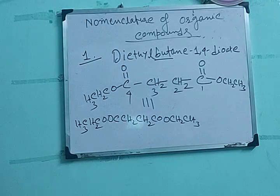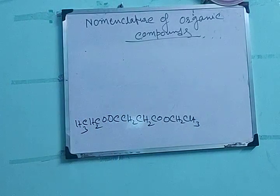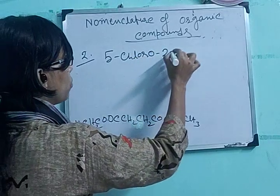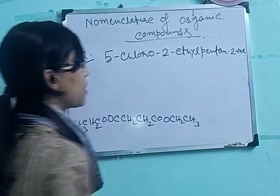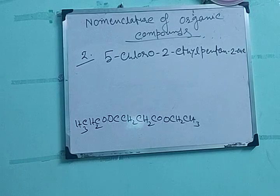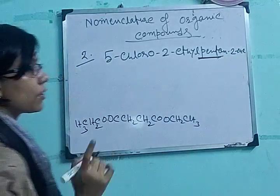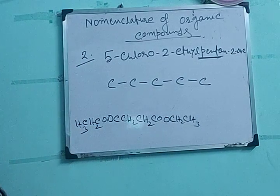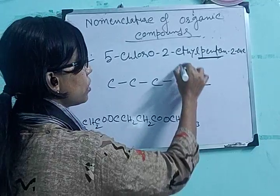The next example is number 2: 5-chloro-3-ethyl-pentan-2-one. The suffix here is '-one', and you can identify this as a ketone. The suffix '-one' represents the ketone. So the functional group is ketone. Number of carbon atoms — it is pentane, so 5 carbons. Put 5 carbon atoms: 1, 2, 3, 4, and 5. 2-one means carbon number 2 bears the ketone group. So put the ketone group at carbon number 2.